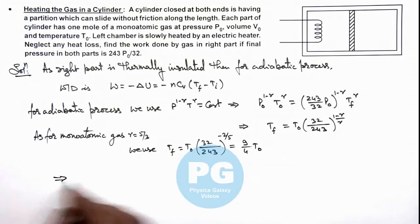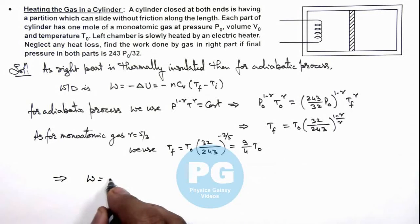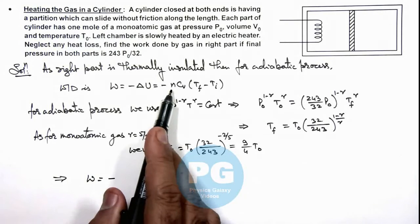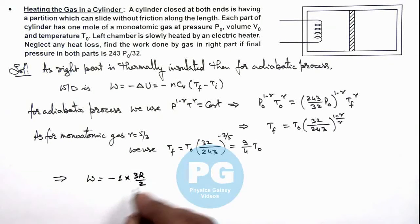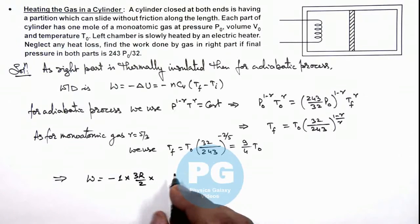This implies now work done we can write as minus, number of moles we are already given as 1 mole, so this 1 multiplied by c_v for a monoatomic gas is 3R/2, multiplied by the temperature 9/4 t_not.